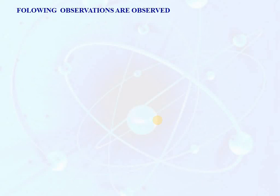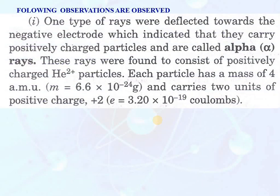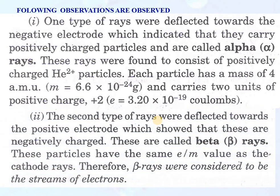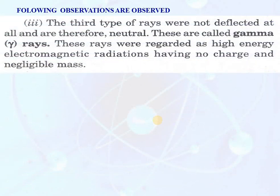The following observations are noted: One type of rays are deflected towards the negative electrode, indicating they carry positively charged particles — these are called alpha rays, found to consist of positively charged helium particles. Each particle has a mass of 4 amu and carries 2 units of positive charge. The second type, beta rays, are deflected towards the positive electrode, showing negative charge, and have the same e/m value as cathode rays — they are a stream of electrons. The third type, gamma rays, are not deflected at all and are therefore neutral. These are regarded as high-energy electromagnetic radiation having no charge and negligible mass.